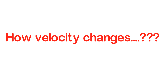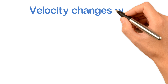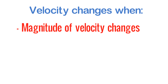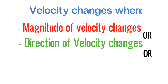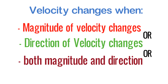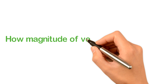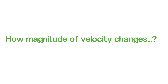Then I will answer: velocity changes when the magnitude of velocity changes, or the direction of velocity changes, or when both magnitude and direction of velocity change. If any one of these three is happening, then we say velocity is changing. Now if someone asks me how the magnitude of velocity is changing, I will give you an example.